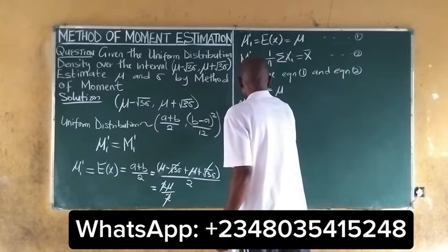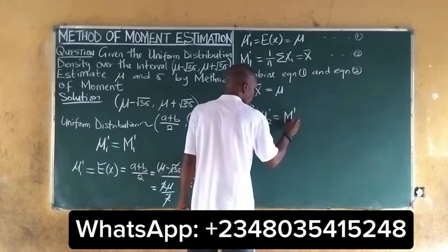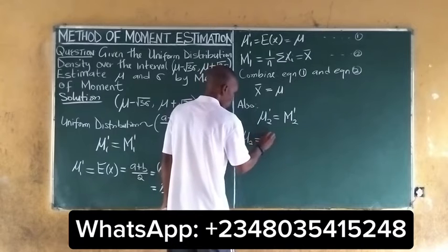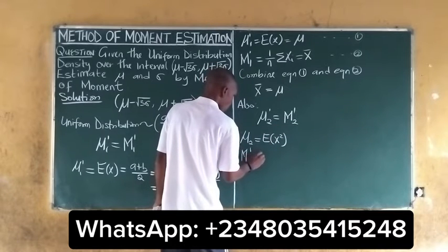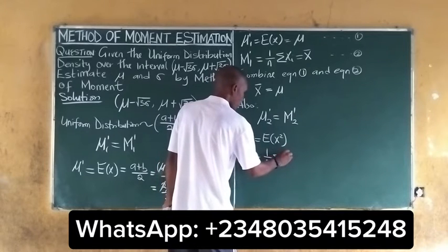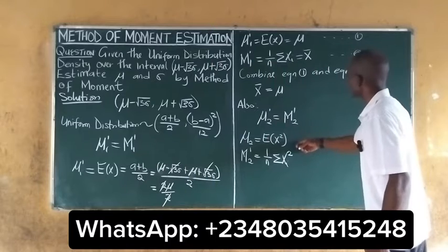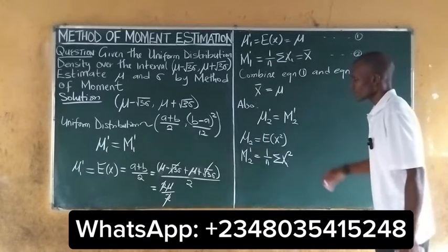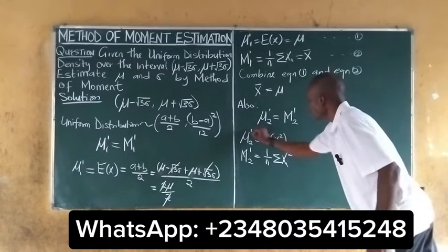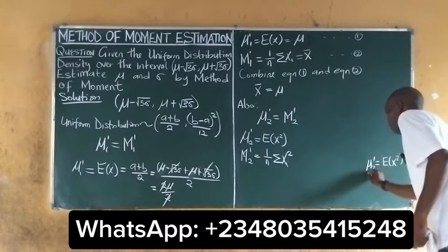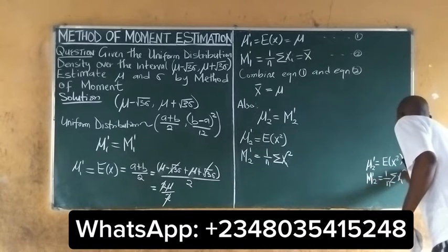For the second moments, the population mean is equal to the sample mean. The population second moment is the expected value of x squared, and the sample second moment is (1/n) summation of xi squared.